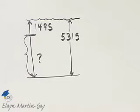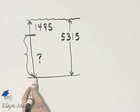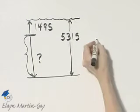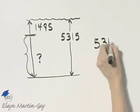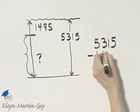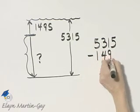To find that out, we'll find this distance simply by subtracting these two numbers. So let's find 5,315 and from that, let's subtract 1,495.